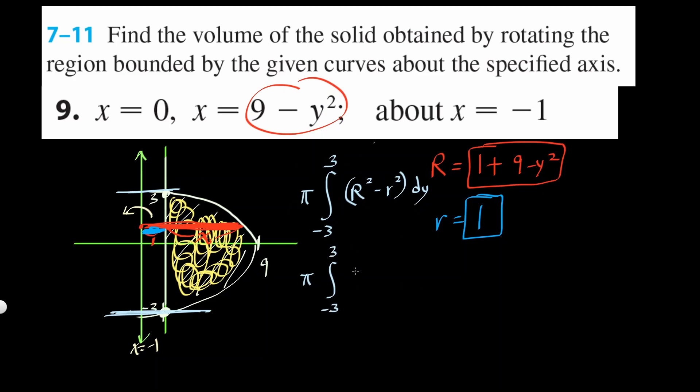Let's plug things in now. So it's pi outside, negative 3, 3, big radius, which is going to be 10 minus y squared. I'm going to square that. Make sure you square it. Minus little r is 1, the whole thing squared. Everything times dy.